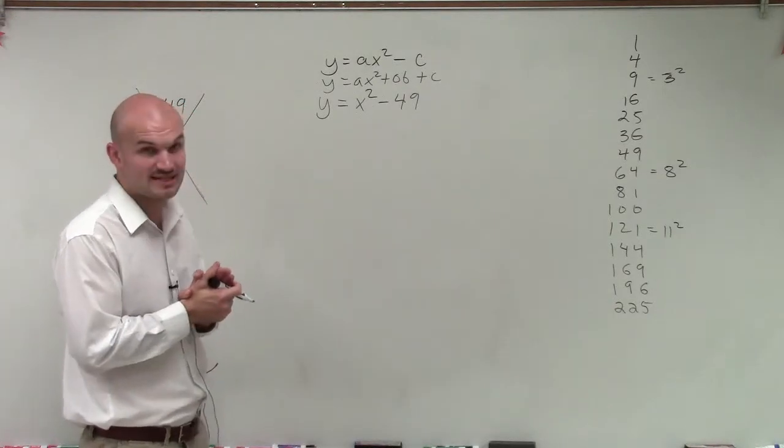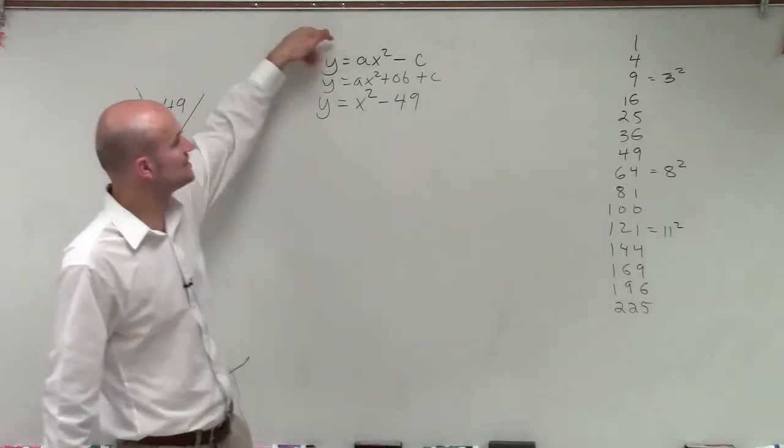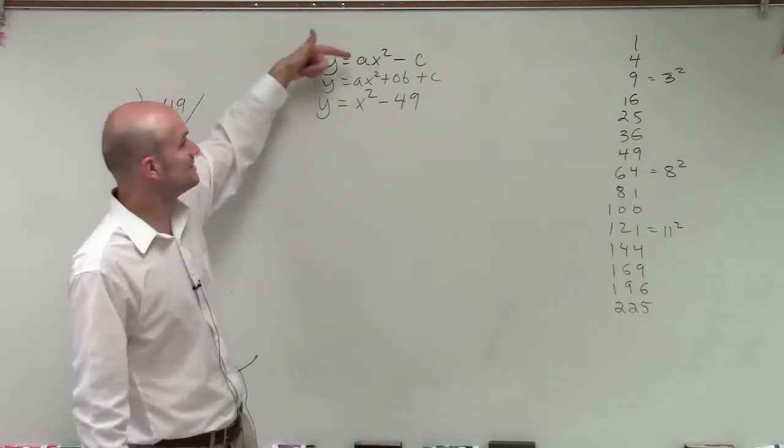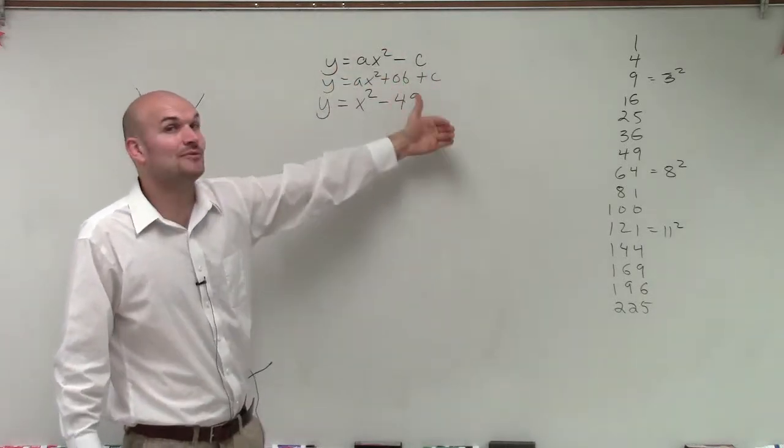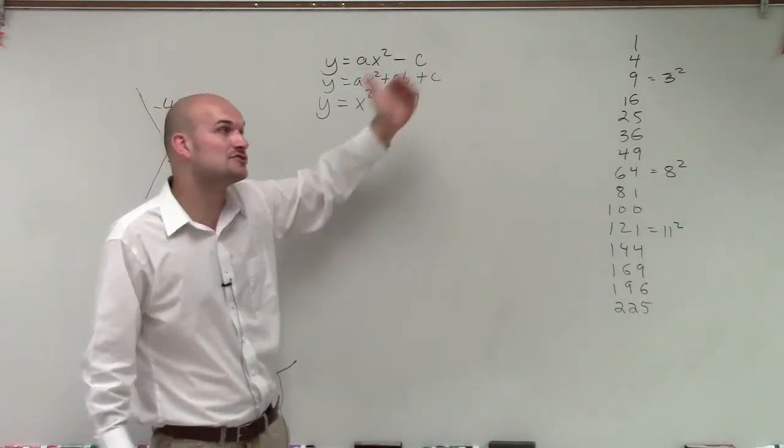So what we're going to look at to determine if it's a difference of two squares, first of all, we always want to make sure it's in this form. If I have something that's in ax squared minus c form, then I'm looking into a possibility of having a difference of two squares.